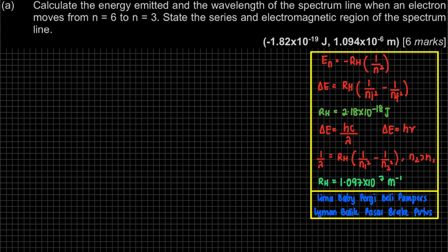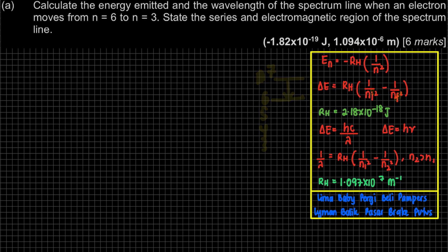Besides the difference in the Rydberg constant, the other difference is that the 1/λ formula uses 1/N₁² minus 1/N₂². For delta E, the initial must be a bigger value since the electron falls — so initial is larger and final is smaller. But for the 1/λ formula, it's completely different — it's a swap: smaller minus bigger.